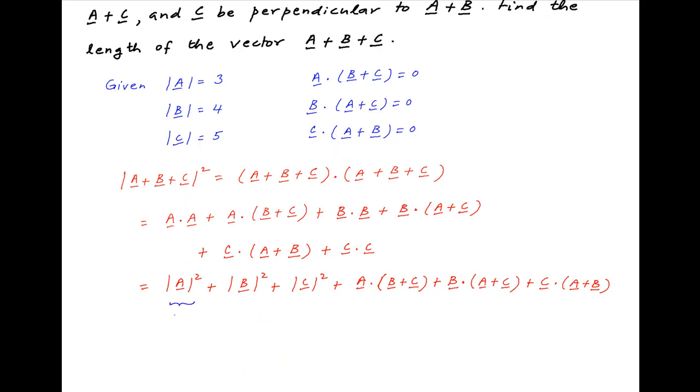The first term is equal to 3 squared or 9. The second term is equal to 4 squared or 16. The third term is equal to 5 squared or 25, and the last three terms are all equal to 0. Therefore this expression is equal to 9 plus 16 plus 25 which is equal to 50.